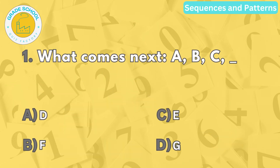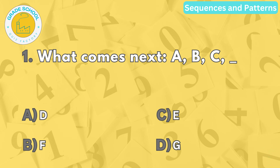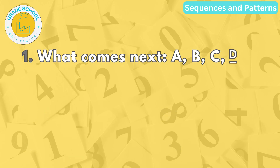Question number one. What comes next? A, B, C, blank. The correct answer is letter A. The sequence follows the alphabet order and moves to the next letter.